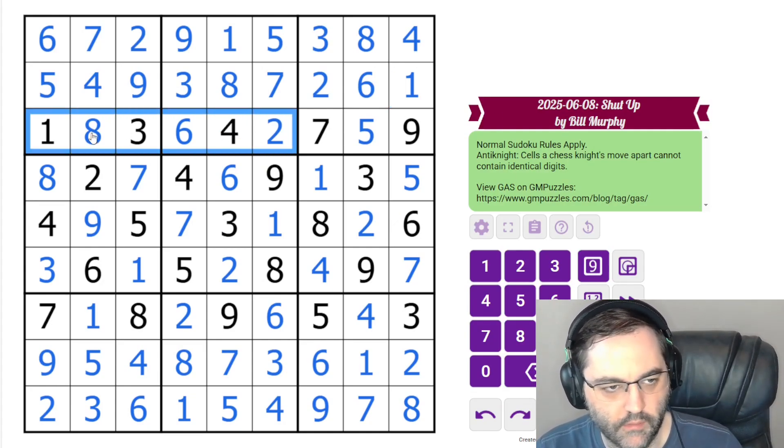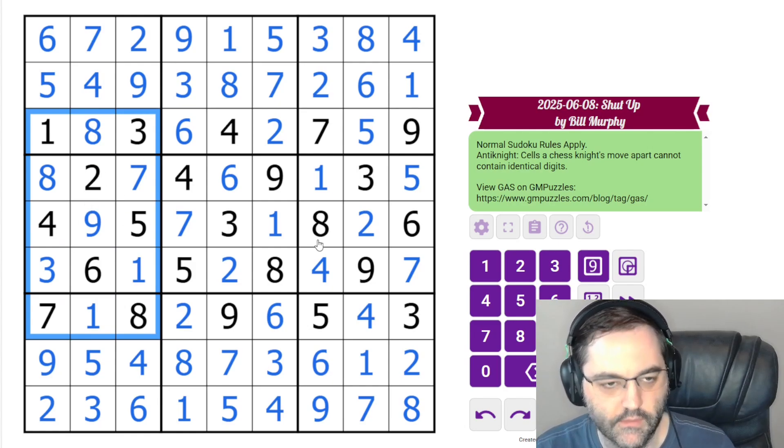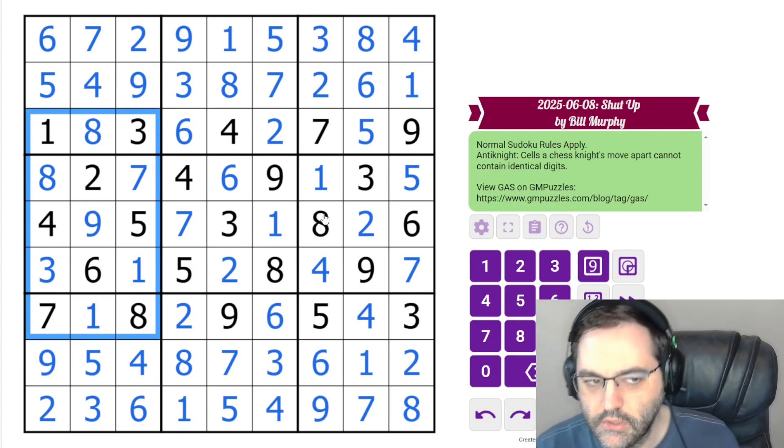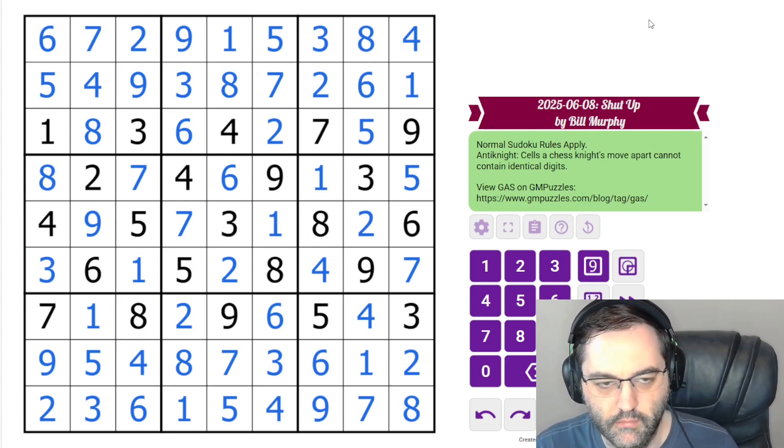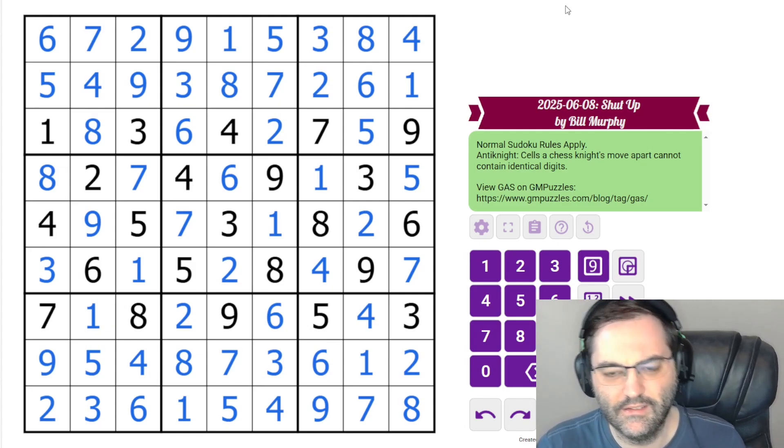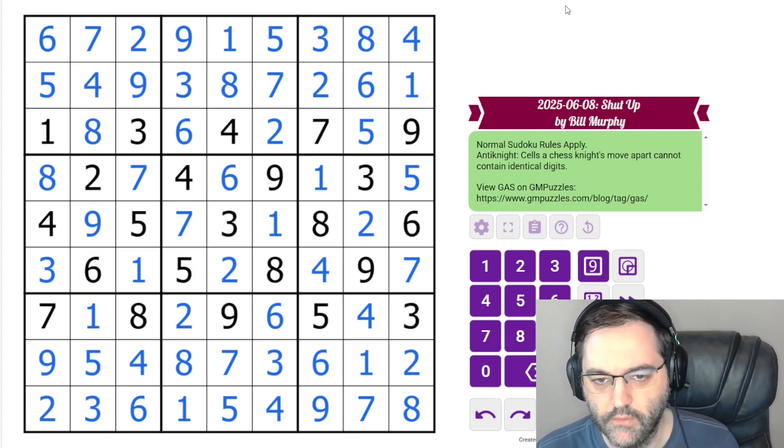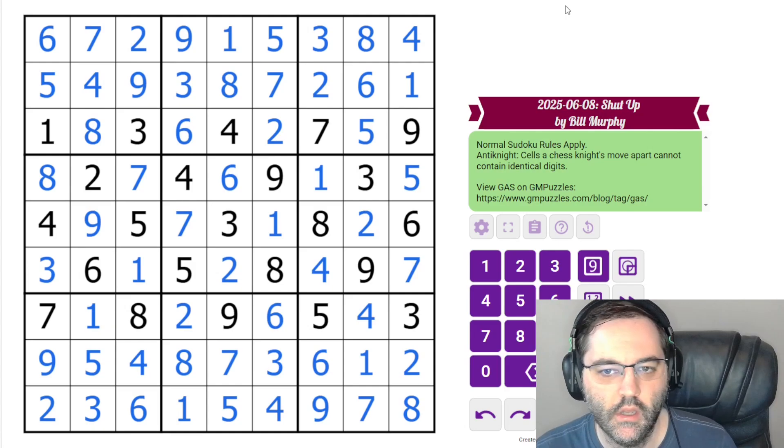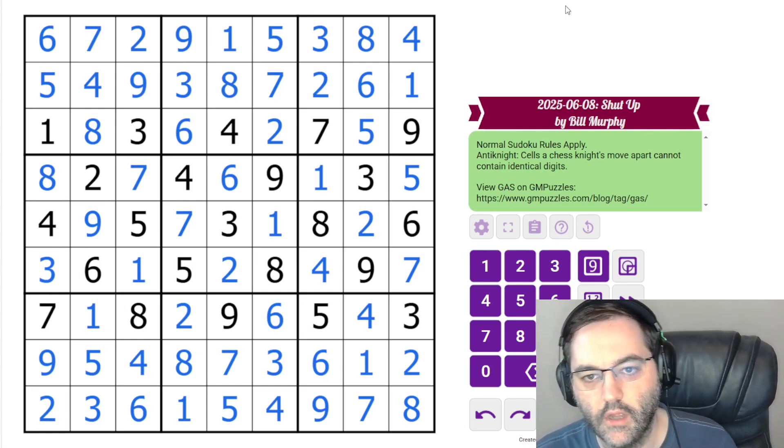A really neat setup with the anti-knight into the boxes in the middle. A little bit trickier at the end. It could take you a while to find the singles, especially if you're not doing a lot of pencil marking, or just because the anti-knight is a little hard to scan for. We don't do them as often, so we don't look for those eliminations. But that is how you solve Shut Up by Bill Murphy. Hope you enjoyed it. Let us know how you did in the comments.